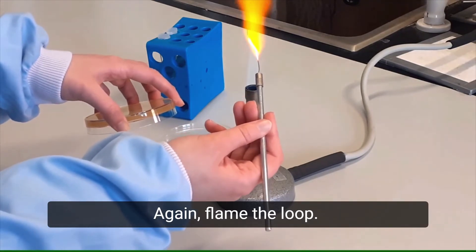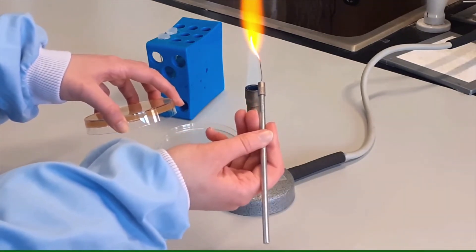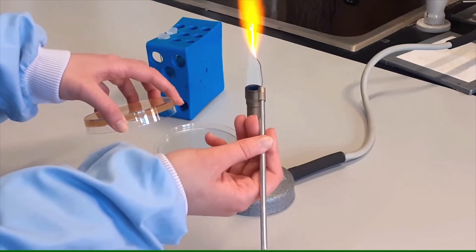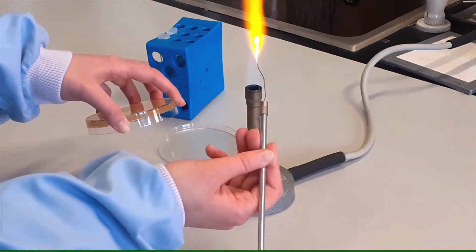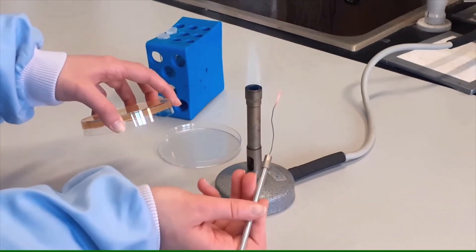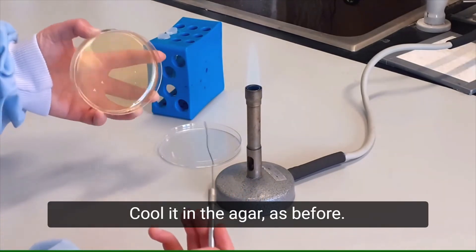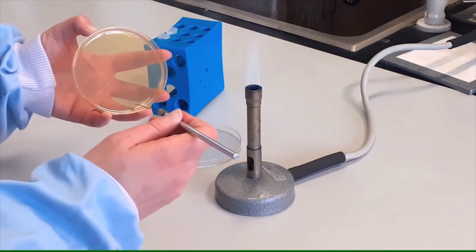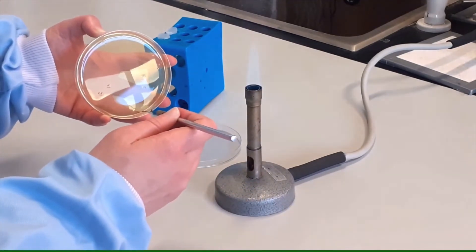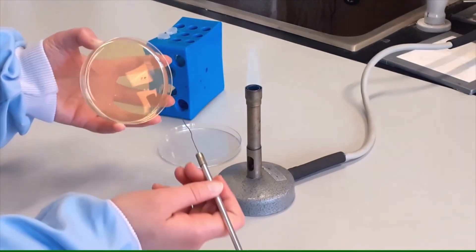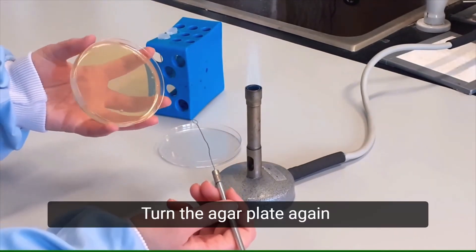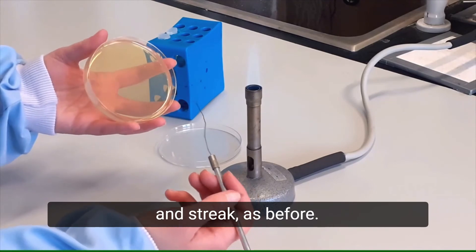Again flame the loop. Cool it in the agar as before. Turn the agar plate again and streak as before.